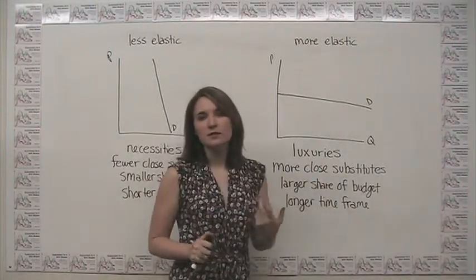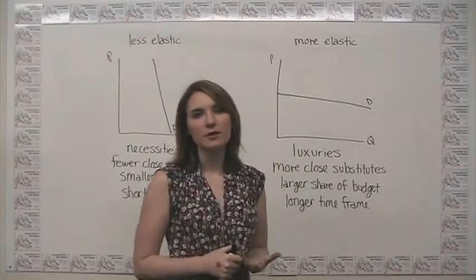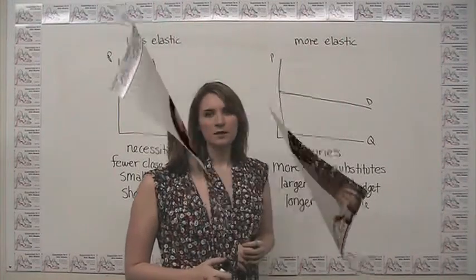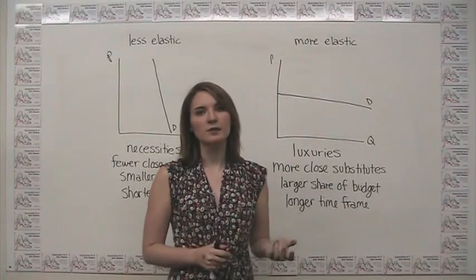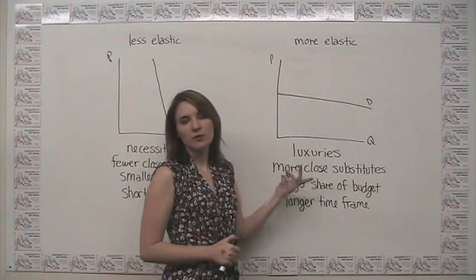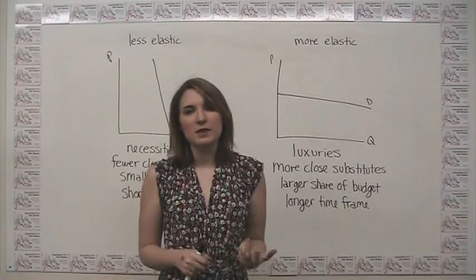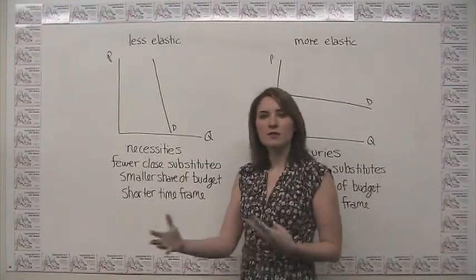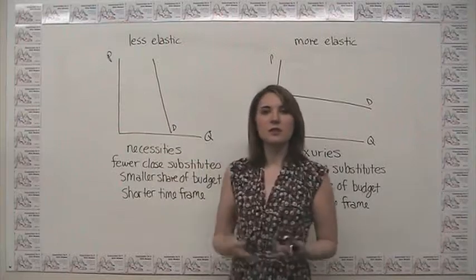Items considered luxuries — they're nice to have but we don't really need them — go in the more elastic category, because if their price changes a lot, we'll just say we didn't really need it and change our behavior. The second rule is that goods with more close substitutes will have higher elasticity of demand. If there are a lot of substitutes and the price changes, you can just buy something basically equivalent instead. If a product has fewer close substitutes, you're kind of stuck, so that price can change and you won't be able to change your behavior.